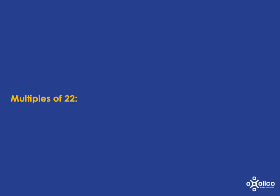We've been focusing on multiples of very small numbers, but you can find the multiples of any number. For example, the multiples of 22 are just the things you get when you take 22 and multiply it by a positive whole number — so 22 times 1, 22 times 2, 22 times 3, 22 times 4, 22 times 5, 22 times 6, and so on.